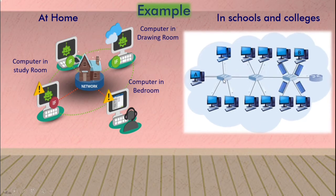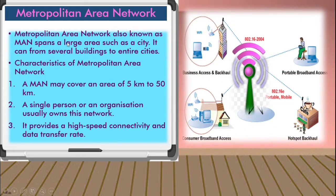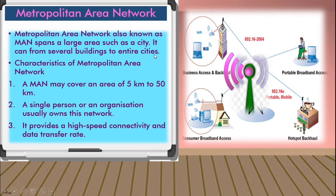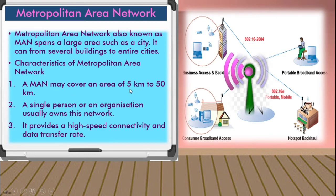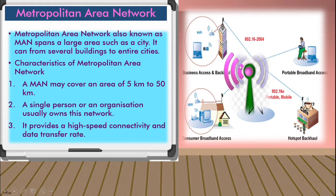Now we will see the next network — Metropolitan Area Network, also known as MAN. This network connects a large area such as a city, from several buildings to an entire city. A metropolitan area network can cover an area of 5 km to 50 km. This network can be used by a single person or an organization or company, and it provides high-speed connectivity.